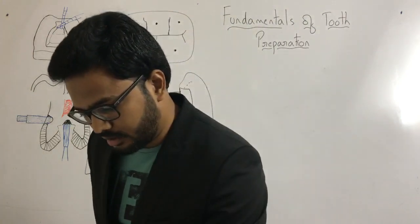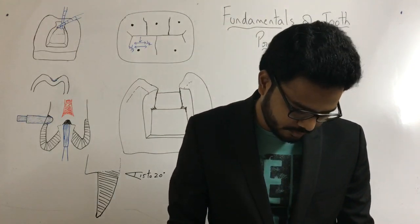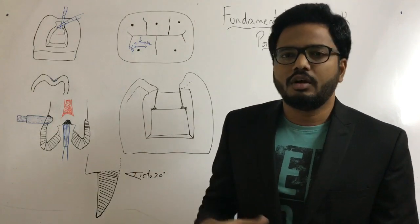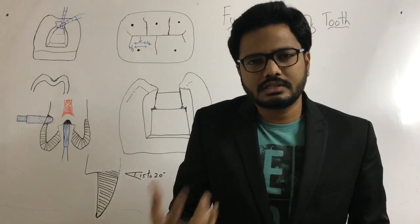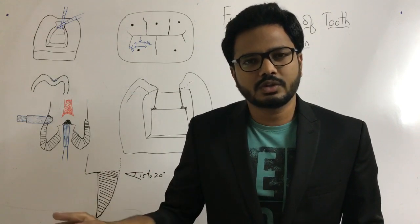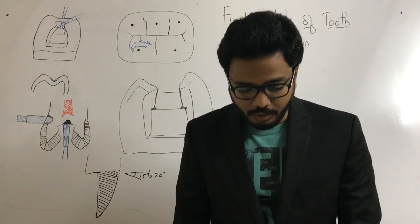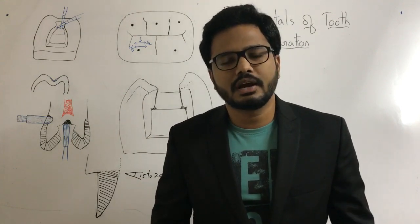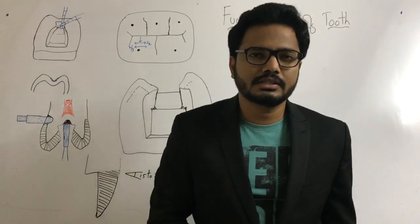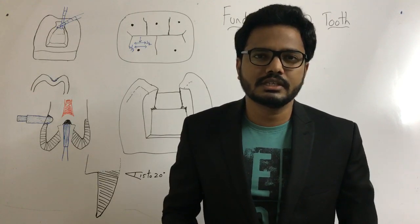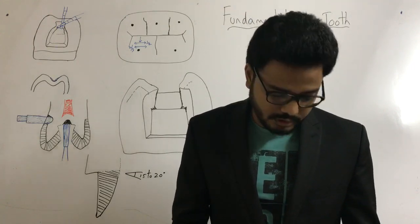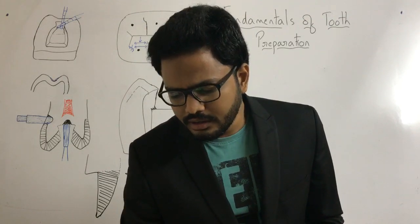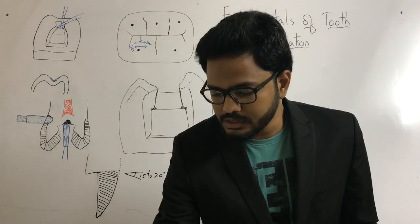The objectives of tooth preparation similarly include preserving the remaining tooth structure, removing all the carious or infected part, and restoring not only the restorative aspect but also the aesthetic and functional aspects. This virtual classroom session will first focus on the differences in tooth preparation between amalgam versus composite, then proceed with terms like enameloplasty, prophylactic odontotomy, KO surface angle, and then the various steps in cavity preparation.